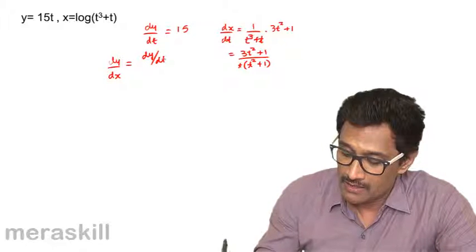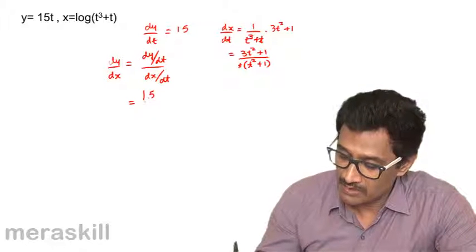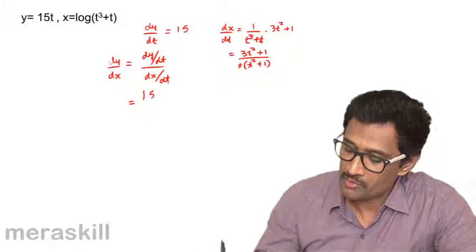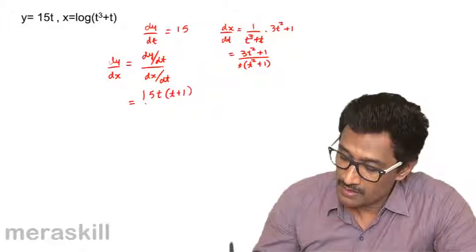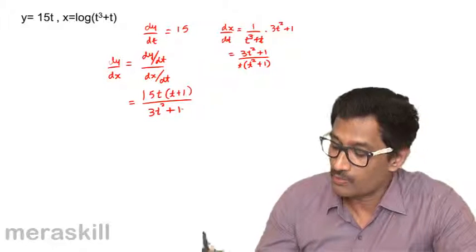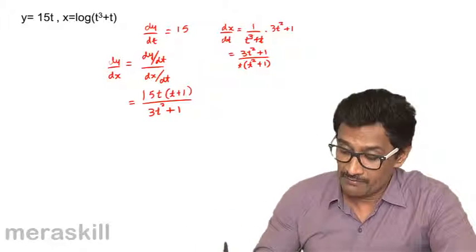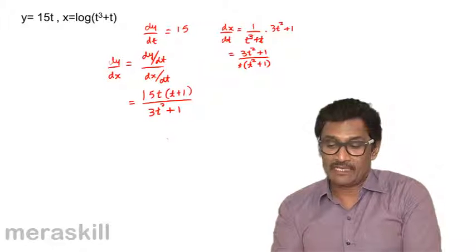So dy by dx is hence dy by dt upon dx by dt, which is 15 upon this, so it's going to be 15t times t square plus 1 upon 3t square plus 1. Hence we can find dy by dx, and we have now expressed the relation between y and x.